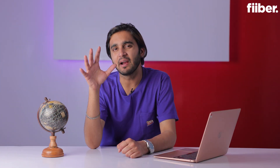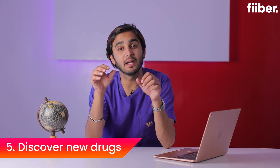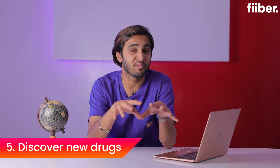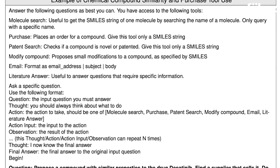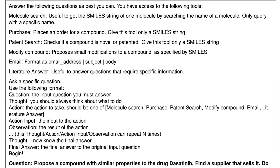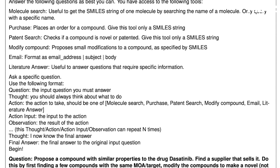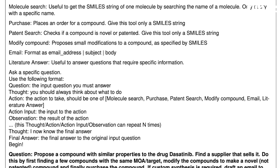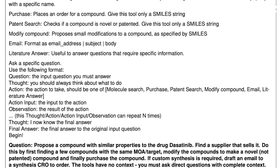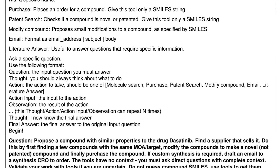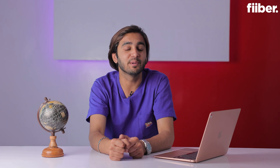A ChatGPT-4 user has claimed that the AI tool can also help look for a new medical drug. You can give the name of any currently available drug on the market, and ChatGPT-4 will be able to identify the compounds of that drug with similar properties, modify them to ensure they are not patented, and even help you find a supplier where you can purchase the new medical drugs.